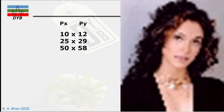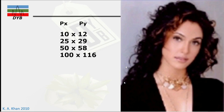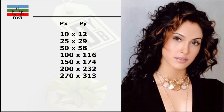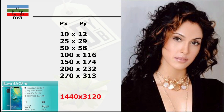When we keep increasing the pixel to about 50 by 58, the picture is becoming more clear and clear. Then we keep increasing to 100 into 116, 150 into 174 — now you can see even each hair of this lady. When we reach up to 270 by 313, which is a very minimum resolution, from this resolution you can see quite clearly. For example, if you are looking at a phone like the Huawei Mate 20 Pro, the pixel resolution for this phone is 1440 into 3120, meaning when taking a picture from this phone, the resolution of the picture is very high.